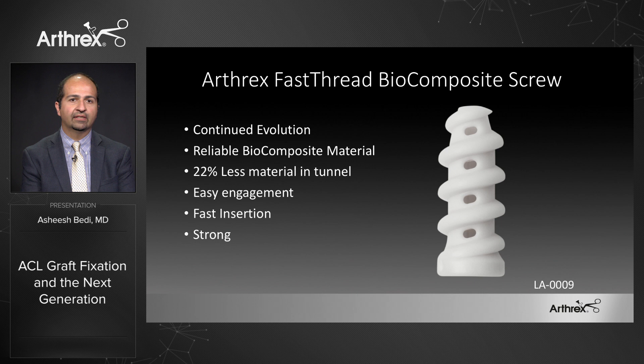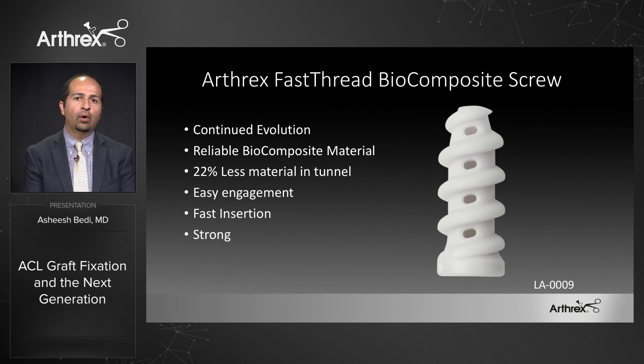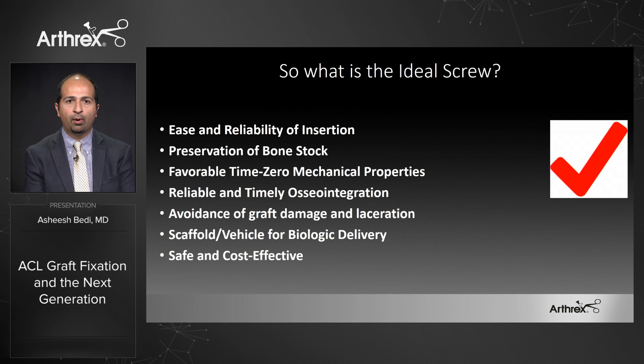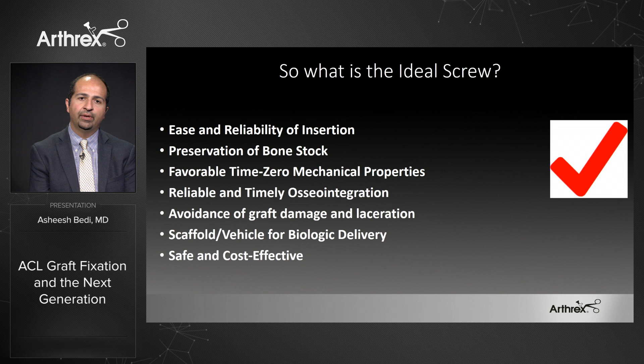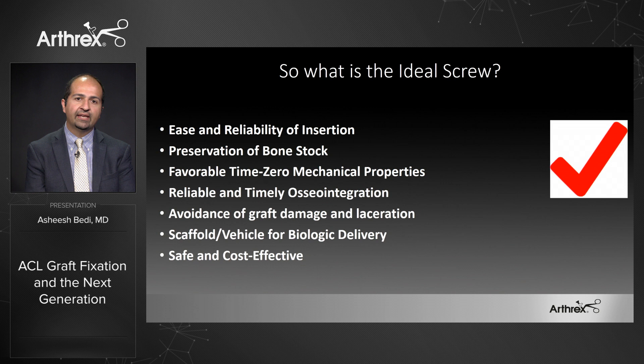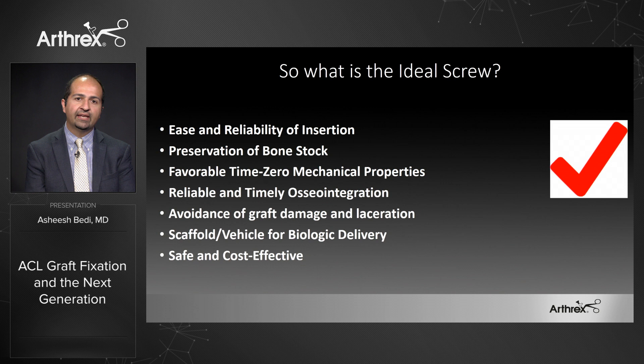To summarize, the fast thread screw represents the amalgamation of all the favorable aspects as we've evolved interference fixation. It's a reliable material with over one million implanted, 22% less material in the tunnel, easily and reliably inserted, and strong. It meets the mark for ideal interference screw fixation: it preserves bone stock, has great time-zero properties, avoids laceration and damage of the graft. And as we launch into the future with biologic delivery, it offers that opportunity at the most important interface of our ACL reconstructions — the tendon-bone interface and the interface of the graft and the socket.